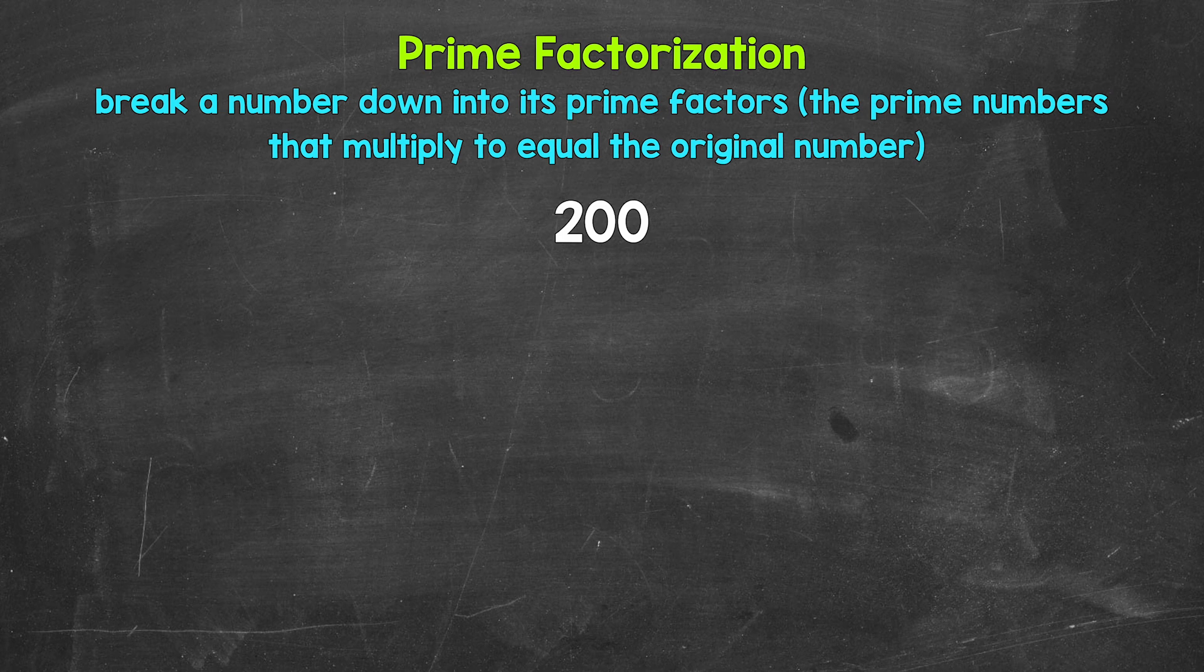Looking at 200, we need to start breaking this down by thinking of two factors, two numbers that multiply to give us 200. Well, 4 and 50 are factors of 200. 4 times 50 equals 200. So let's break 200 down into 4 and 50.